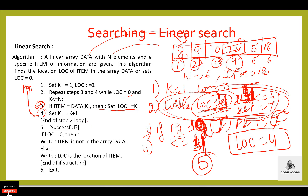The loop ends and control transfers to step 5: if loc equals 0, write 'item is not in the array data.' In this case loc is 4, so the condition is false. The else part executes: write 'loc is the location of item.' The location of item is 4. The item is found at location 4. This is the complete algorithm for linear search.